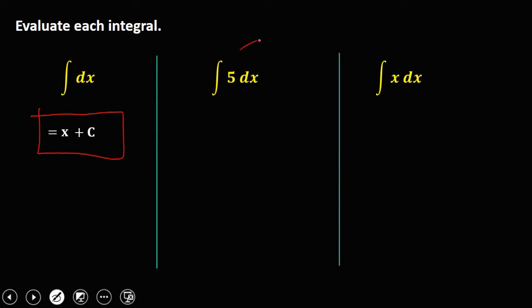For the integral of 5 dx, since we can rewrite this by putting the constant outside the integral, that's 5 times the integral of dx. Bringing down the constant, and since the integral of dx is x, the result is 5x plus C.